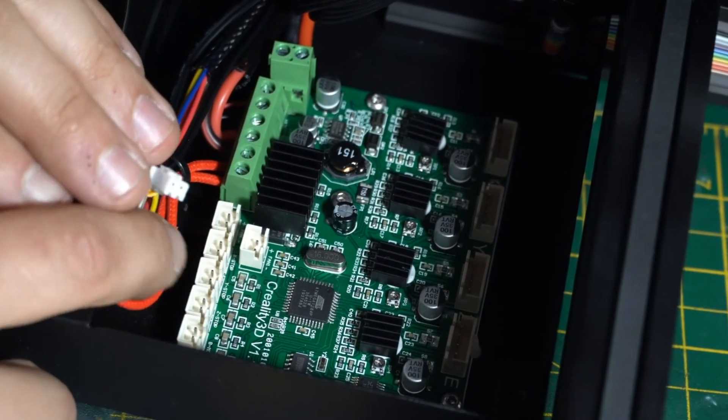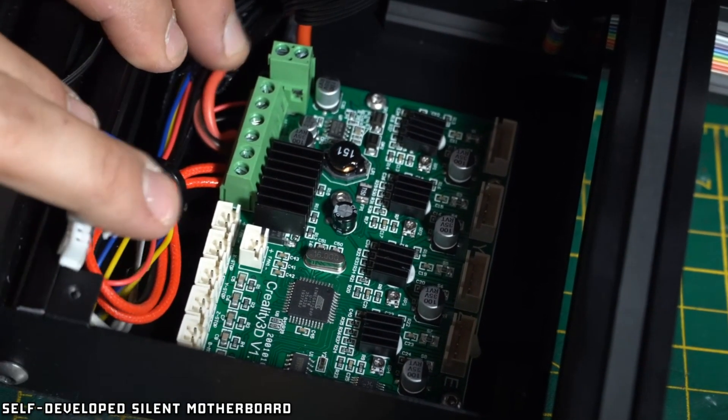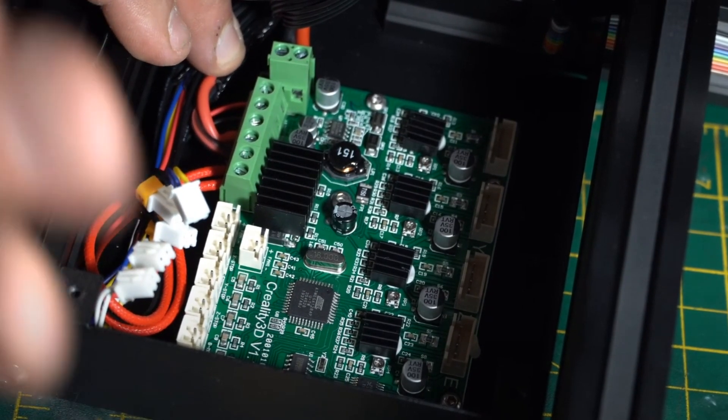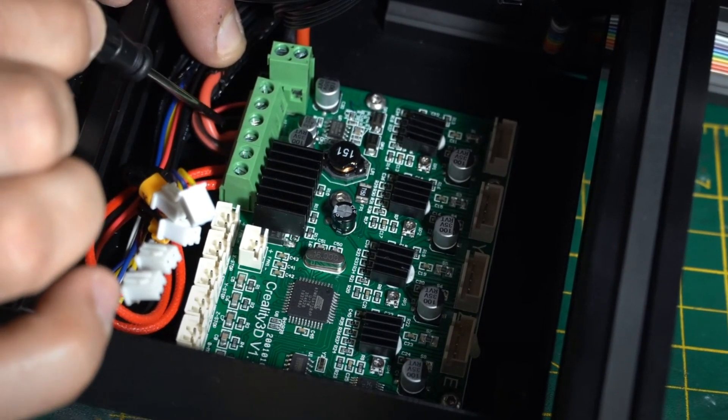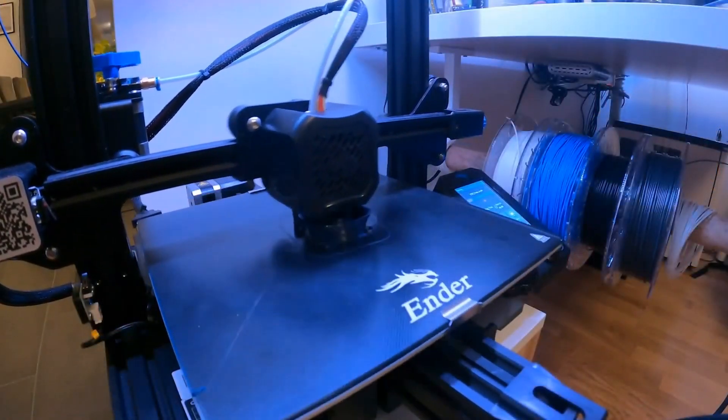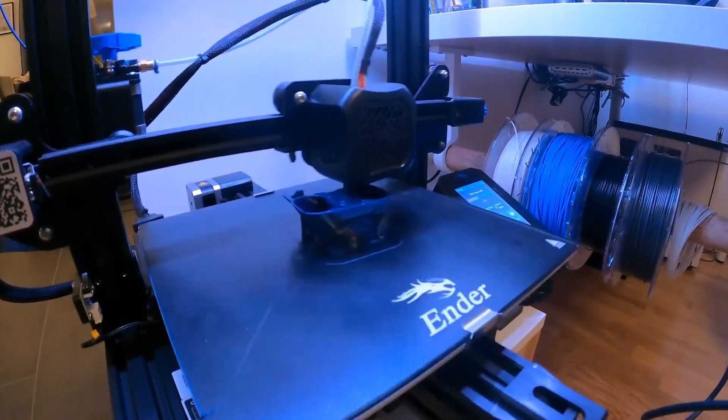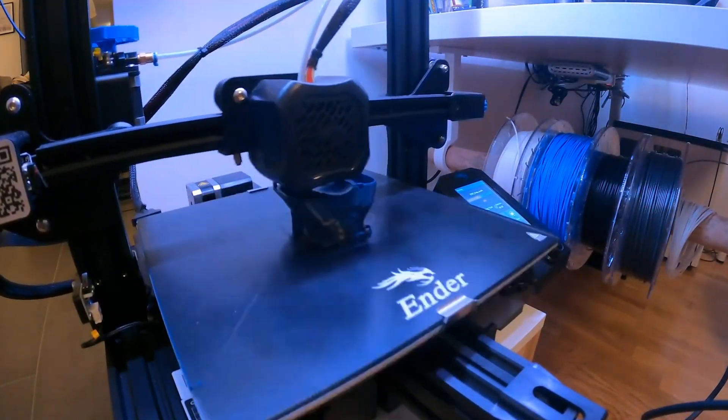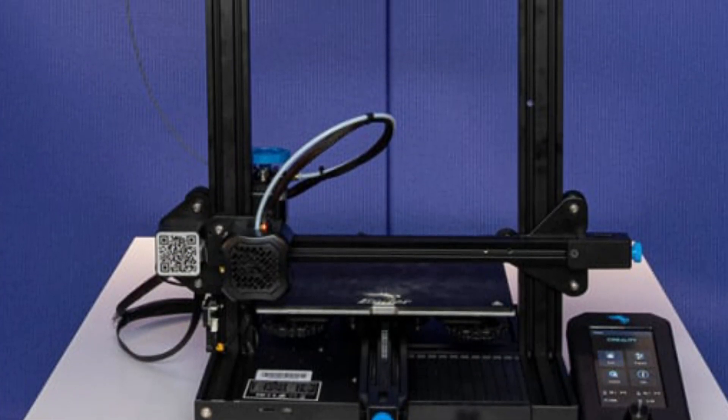The Ender 3v2 features a self-developed silent motherboard, which provides stronger anti-interference, faster and more stable motion performance, and silent printing with low decibel operation. It is equipped with a UL-certified branded power supply, produced by a listed company with mature technology, meeting all the needs of fast heating and long-time printing. The power supply is concealed in the machine, making it much safer.